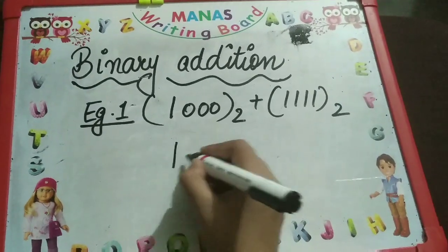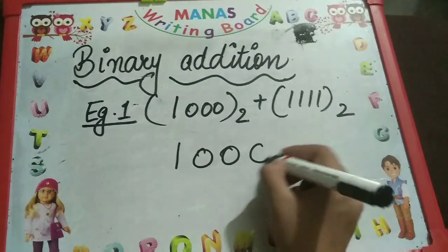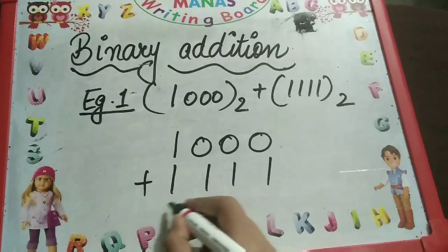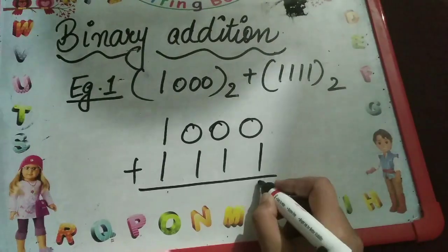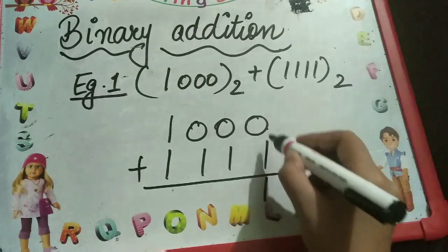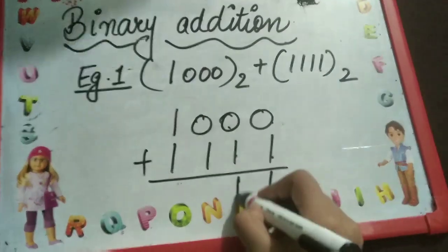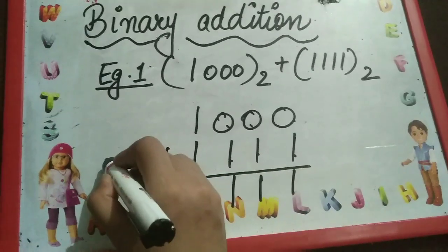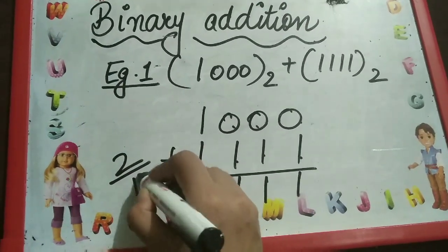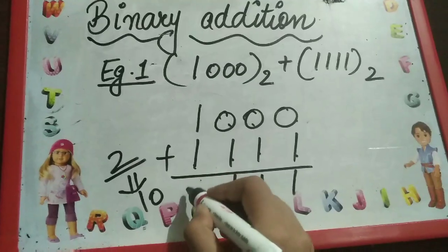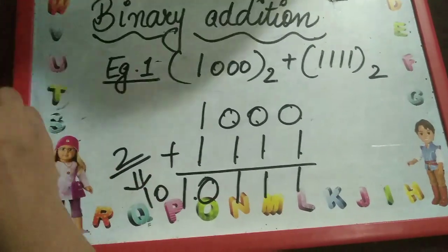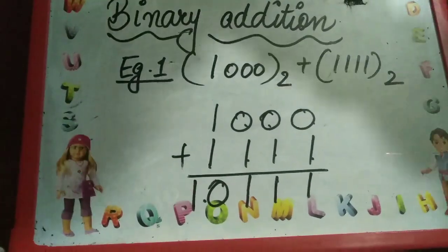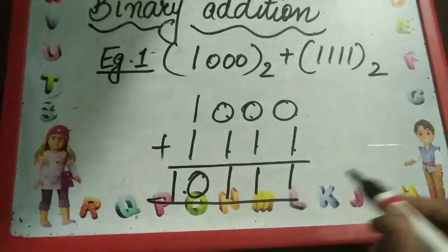Let us take an example: 1000 plus 1111. Adding both of them, arranging in columns and starting from the rightmost side: 0 plus 1 equals 1, 0 plus 1 equals 1, 0 plus 1 equals 1, and 1 plus 1 equals 2, which is equal to 10 in binary form. So our answer is 10111.